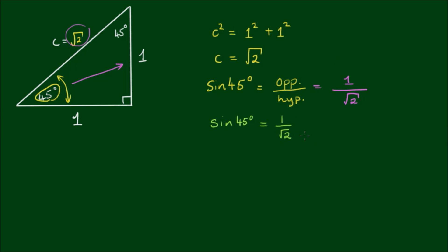Normally we would rationalize this denominator — we would turn this square root of 2 on the bottom into a whole number. To do this, we simply multiply the top and the bottom by square root of 2. This process is called rationalizing the denominator. So this gives us square root of 2 on the top divided by 2 on the bottom, because square root of 2 times square root of 2 is equal to 2. Now similarly, choosing the same angle, but this time let's find the cosine of it.